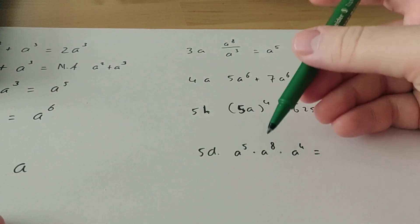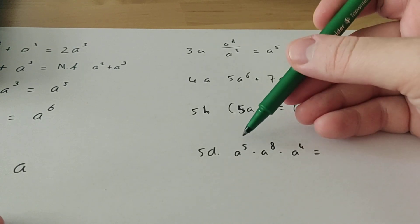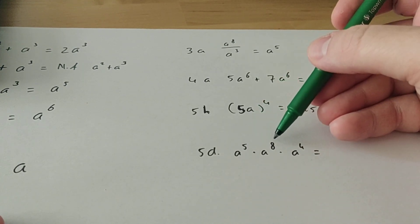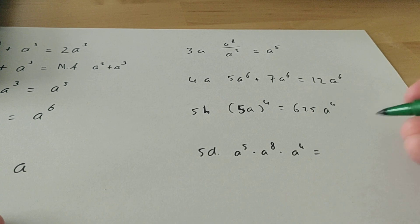And then the last one. This is all times. With times you can add these numbers. So you do 5 plus 8, that's 13. Plus 4 is 17. So this is 8 to the power of 17. Thank you for watching.